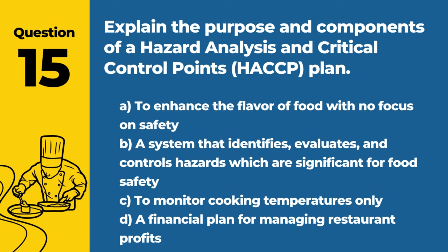Question 15. Explain the purpose and components of a Hazard Analysis and Critical Control Points (HACCP) plan. Answer: B. A system that identifies, evaluates, and controls hazards which are significant for food safety. HACCP is a preventive approach to food safety that addresses physical, chemical, and biological hazards.